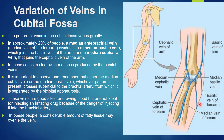It is important to remember that either the median cubital vein or the median basilic vein, whichever pattern is present, crosses superficial to the brachial artery, separated by the bicipital aponeurosis. These veins are good sites for drawing blood but are not ideal for injecting an irritating drug due to the danger of injecting into the brachial artery. In obese people, considerable fatty tissue may overlie the vein, making it difficult to find for injection or blood draw.